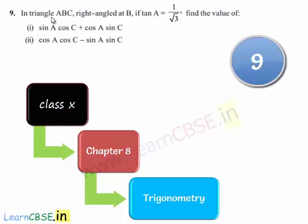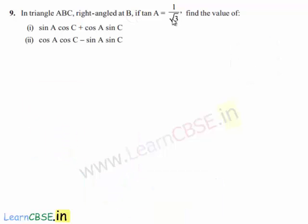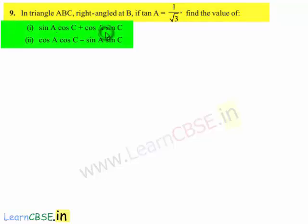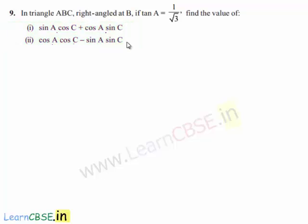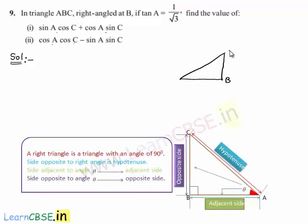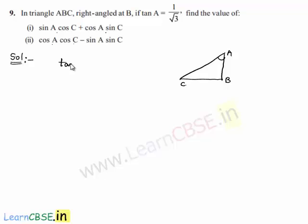Moving on to question number 9: in triangle ABC right-angled at B, if tan A equals 1 by root 3, find the value of (i) sin A cos C plus cos A sin C, and (ii) cos A cos C minus sin A sin C.